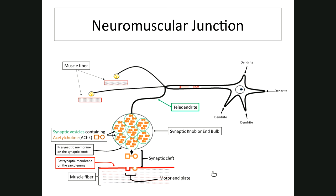A motor unit is a motor neuron and all the muscle fibers it stimulates. A motor neuron stimulates its muscle fibers via telodendrites — each telodendrite goes to its own muscle fiber. Fine movements require fewer muscle fibers per motor unit, producing very small intricate movements.